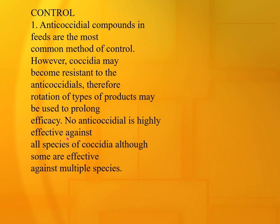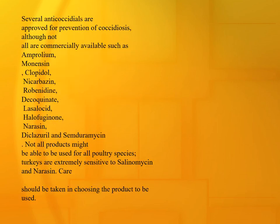No anticoccidial is highly effective against all species of coccidia, although some are effective against multiple species. Several anticoccidials are approved for prevention of coccidiosis, though not all are commercially available: amprolium, monensin, clopidol, nicarbazine, robenidine, decoquinate, lasalocid, halofuginone, narasin, diclazuril, and semduramicin. Not all products can be used for all poultry species. Turkey are extremely sensitive to salinomycin and narasin. Care should be taken in choosing the product to be used.